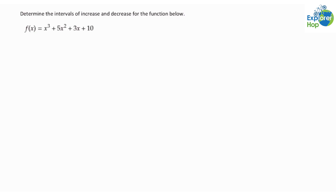In order to find the intervals where the function is increasing or decreasing, we need to first find the critical points. The critical points are where the derivative of this polynomial function is equal to zero.